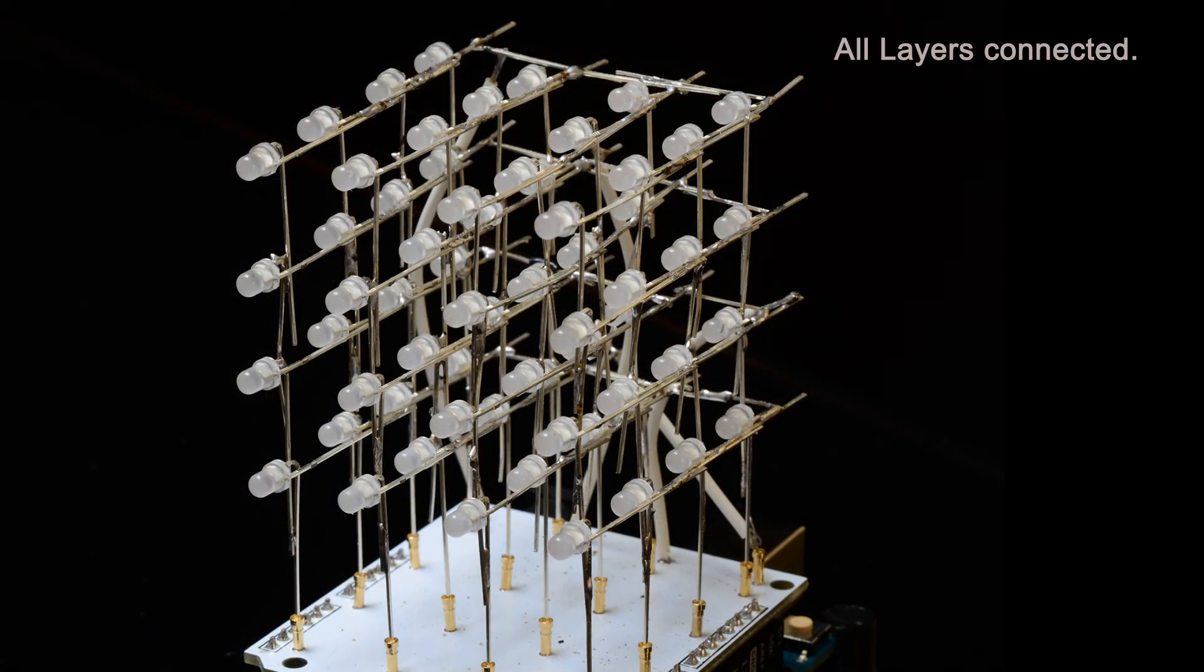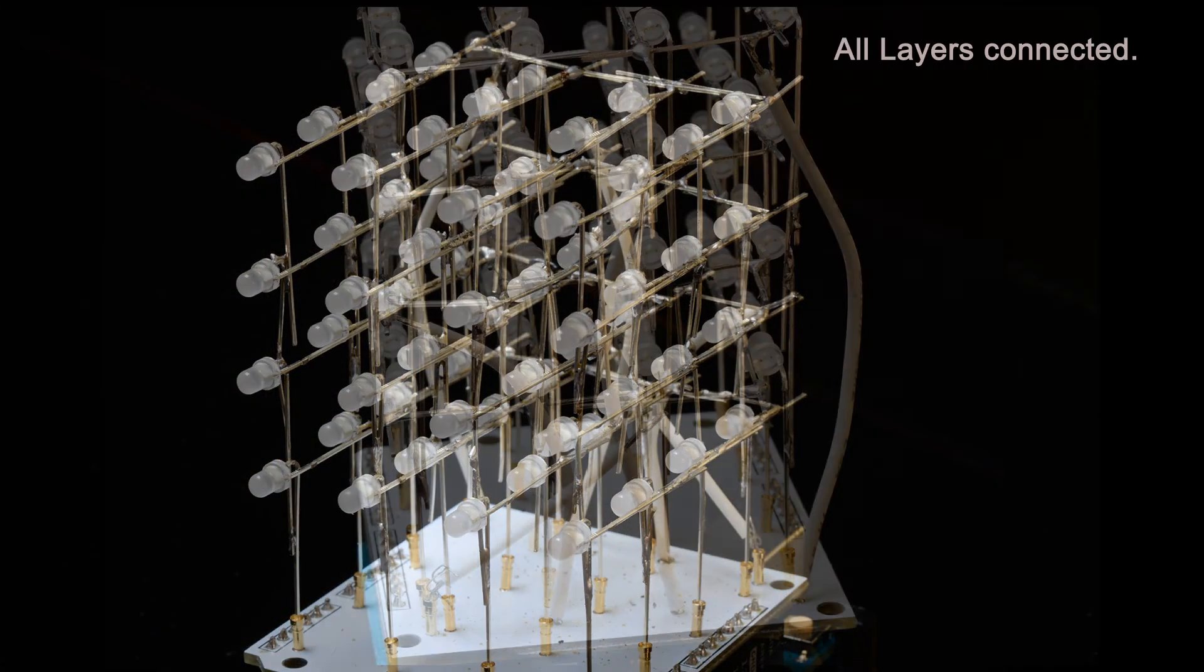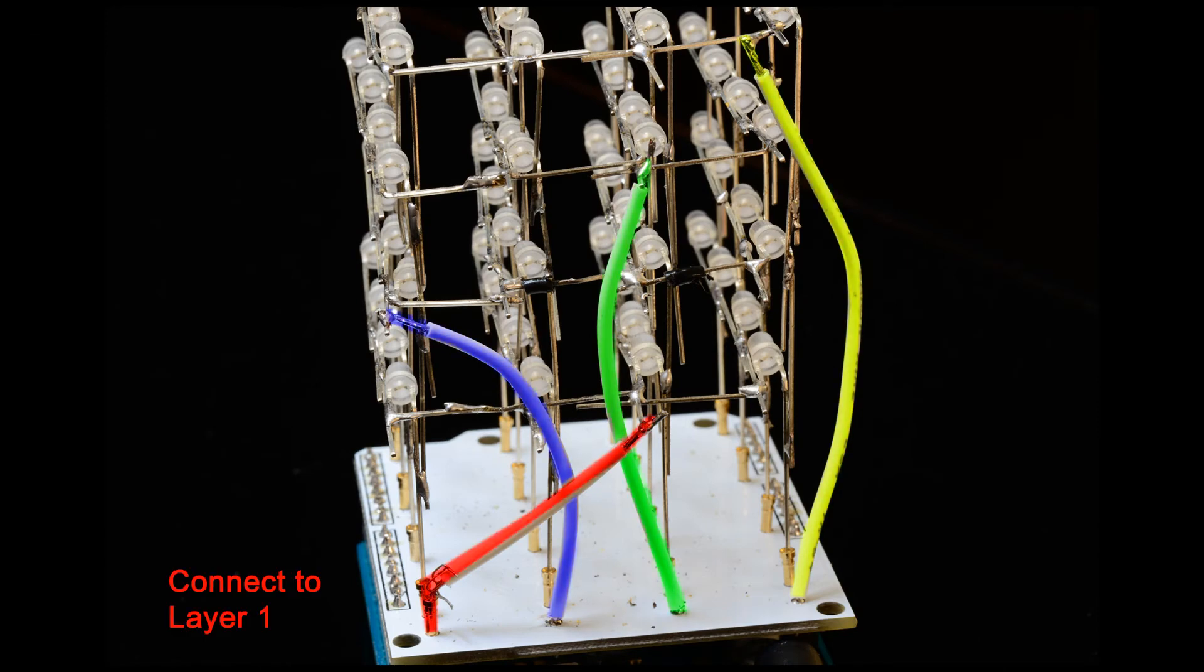Now we have to connect each layer's cathodes to the shield as shown. Solder a wire to each of the four remaining holes in the shield to a corresponding layer on the cube as shown. I've colorized the wires for clarity, but I used white wire to simplify the look of the final cube.